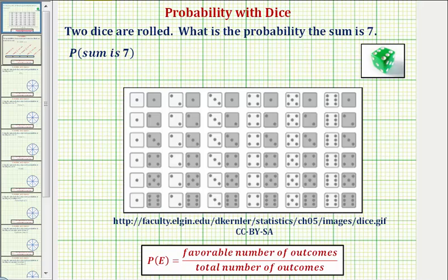So to determine this probability, let's begin by determining the total number of outcomes when rolling two dice. All the outcomes are listed here, so we can tell there are 36 total outcomes.